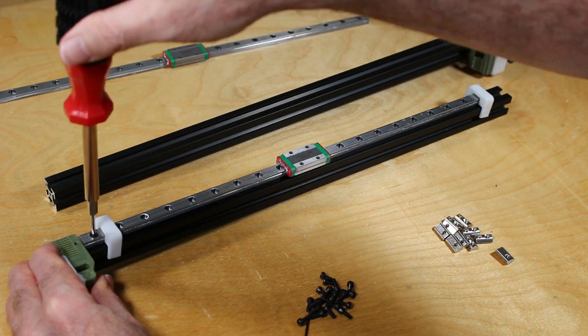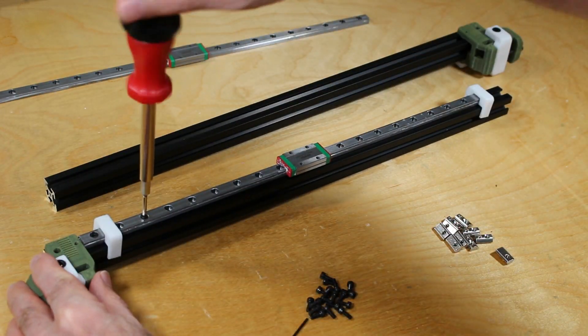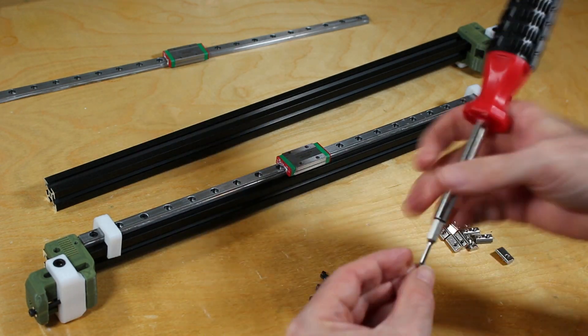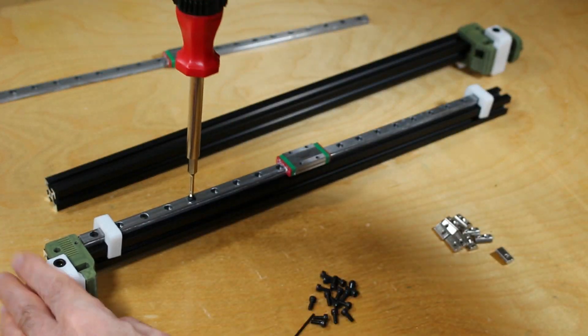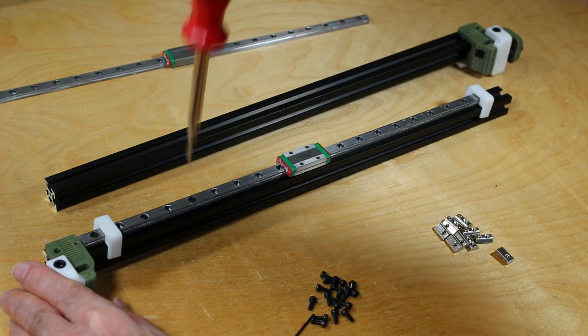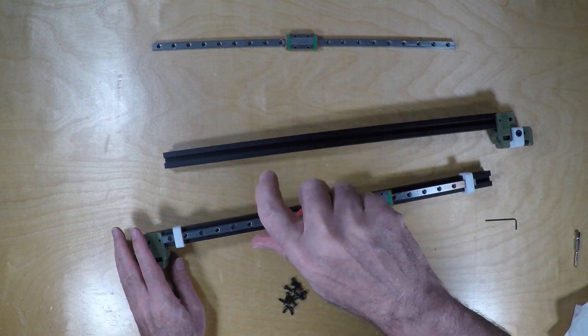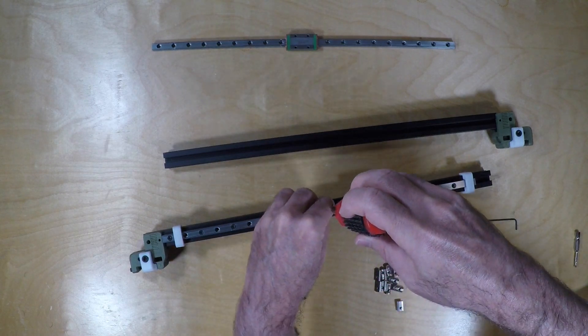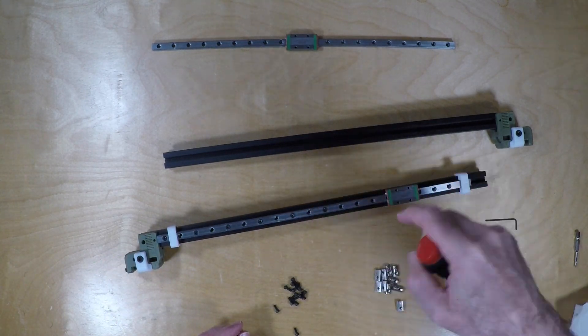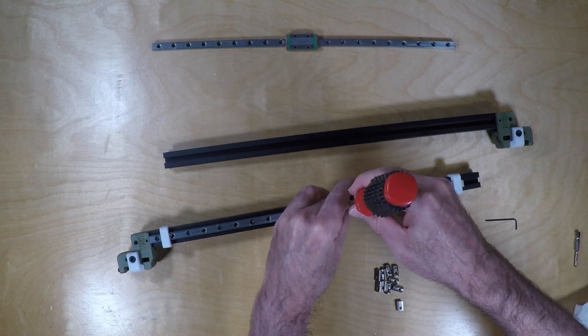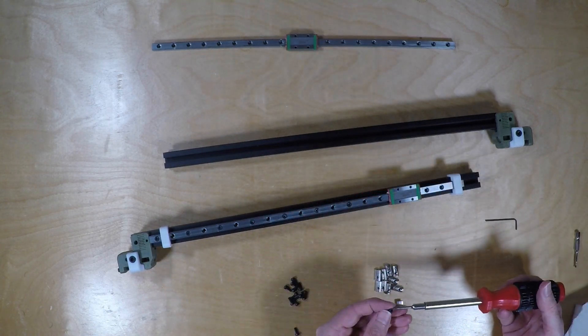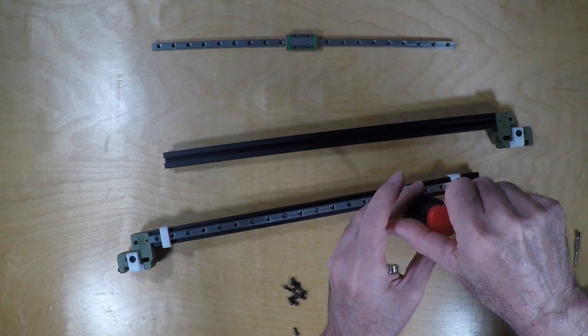And then you can go ahead and tighten all the bolts. It doesn't have to be too tight, just firm. You don't want to do it so tight that you force either the extrusion or the rail to bend in some way. It just really needs to hold it here firmly. And make sure you do the second rail once this is complete.